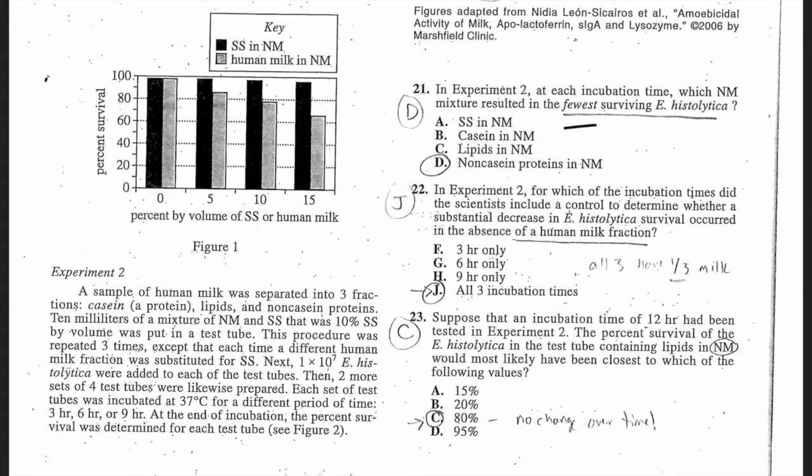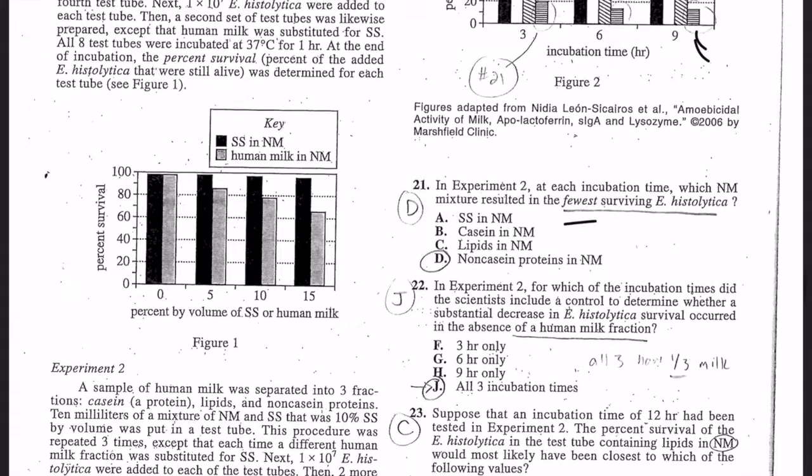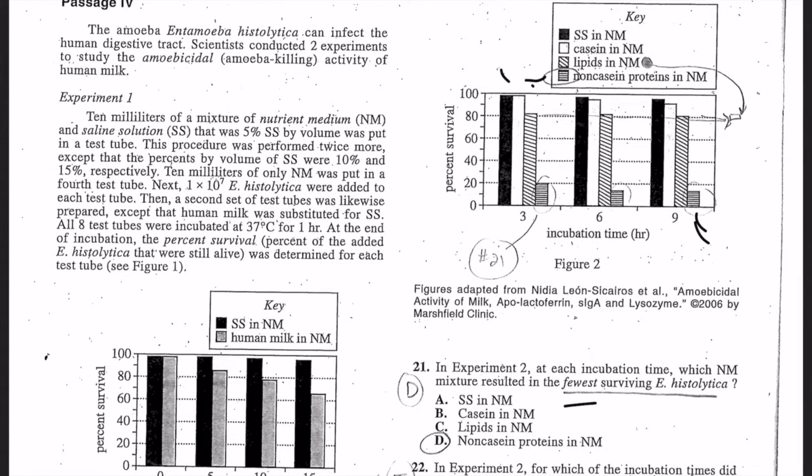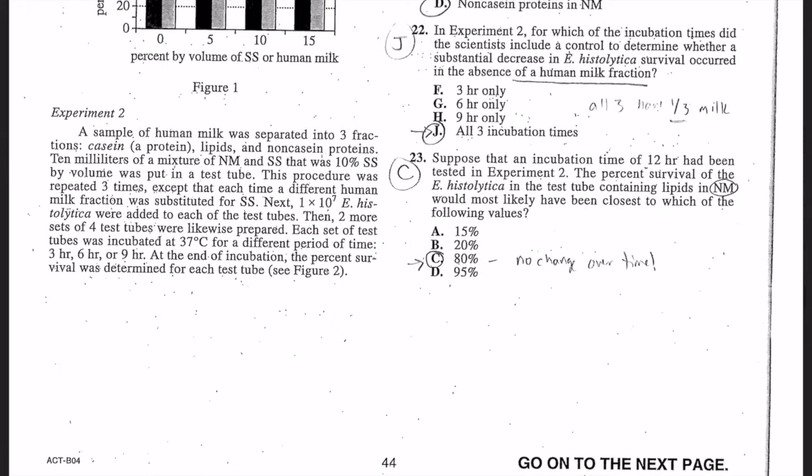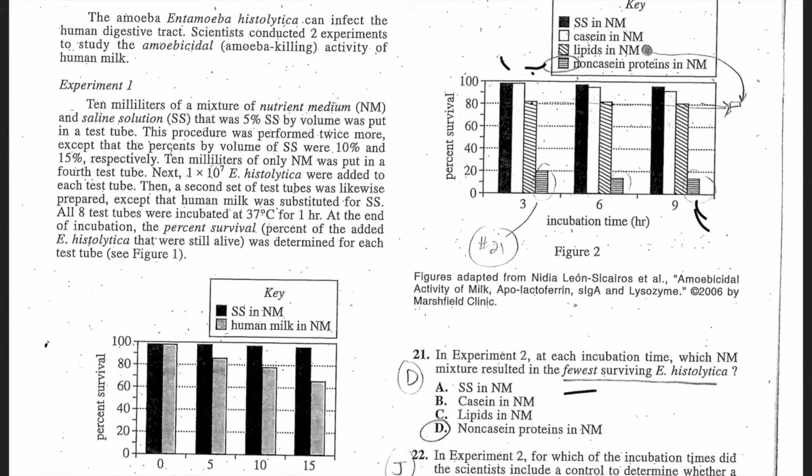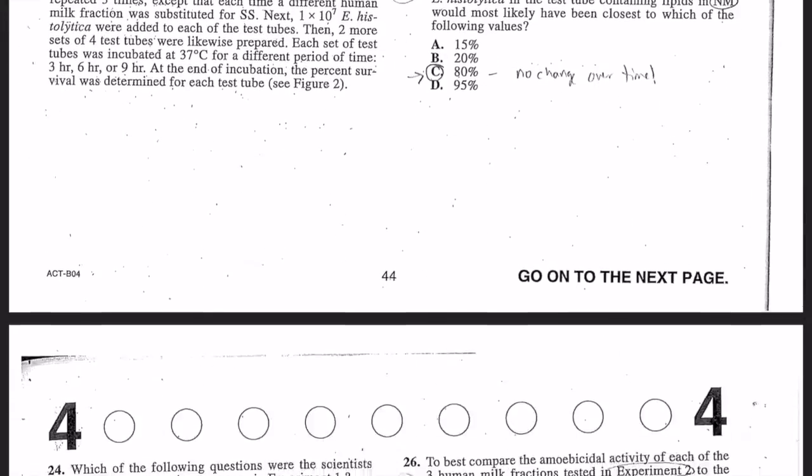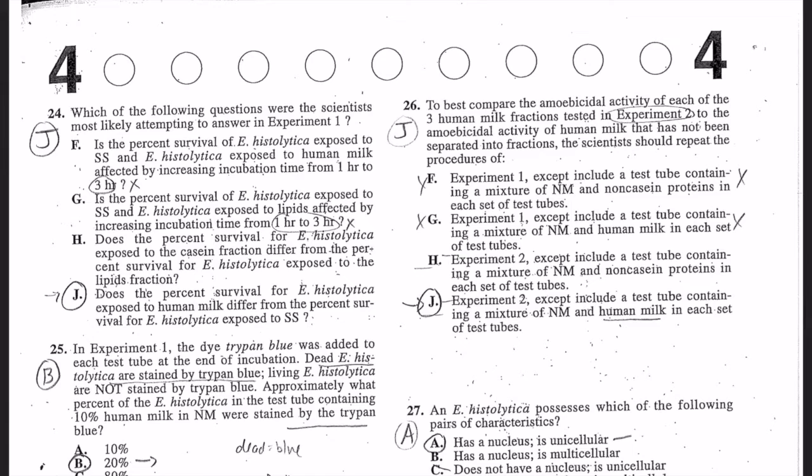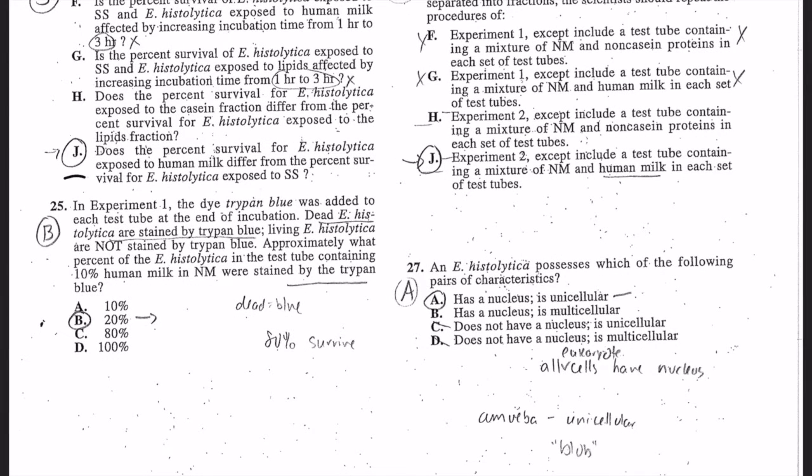Number 22: all three have one-third milk, so all three incubation times. Number 23: there is no change for the NMs, which is the percent survival of the histolytica containing lipids. The lipids was 80, 80, and 80. There's basically no change over time - 80 percent. Number 24: it says is, is, and does, does. So mark off the one to three. It's the percent survival, which is J. Number 25 noticed that it says that are not stained by trypan blue. The dead ones are stained, so the living ones are not. It says the ones that are stained, the dead, are blue, the other ones survive. So if it's 80 percent survive, 20 are dead.